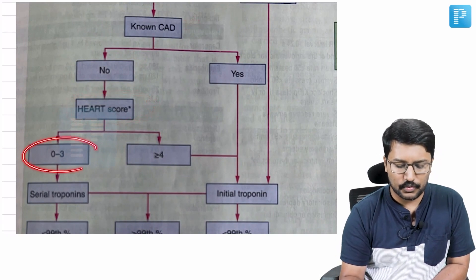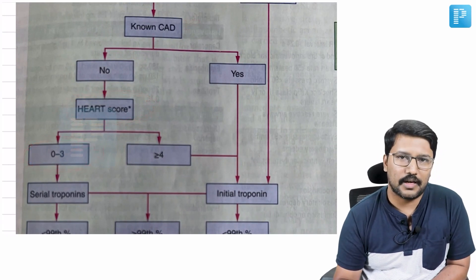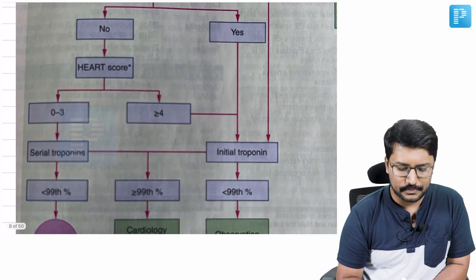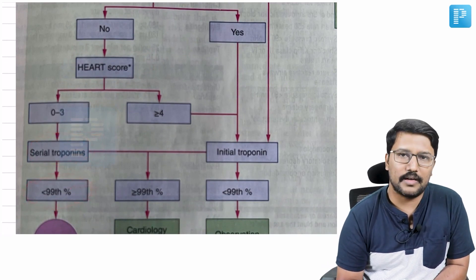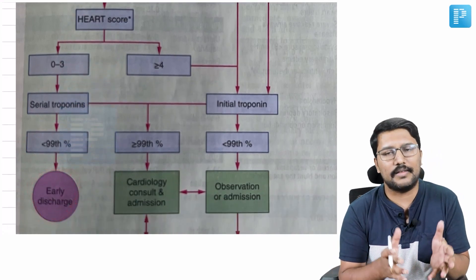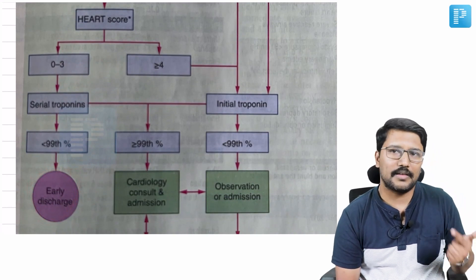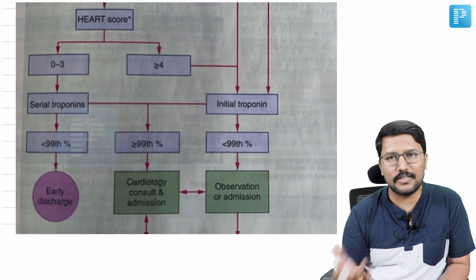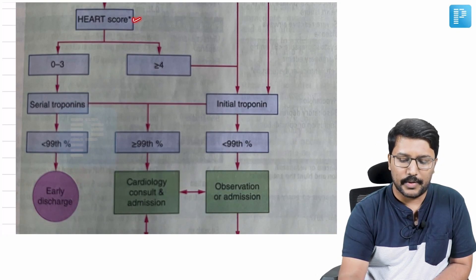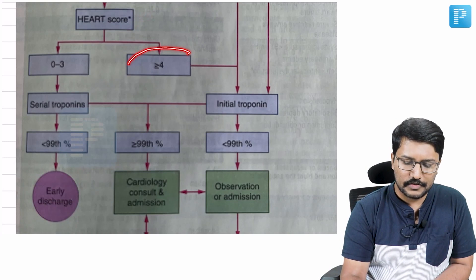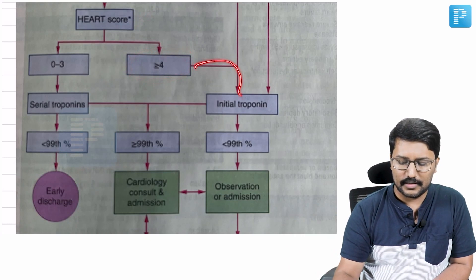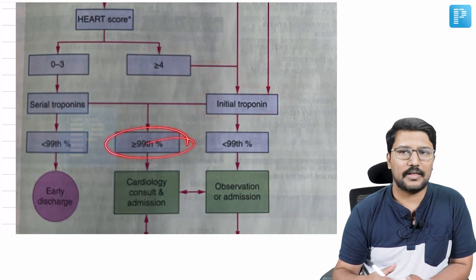In chest pain with a non-ischemic ECG and no known coronary artery disease, you do a HEART score. A HEART score of 0 to 3 indicates low risk of acute coronary syndrome — in that case, proceed with serial troponin levels. If serial troponins are lower than the 99th percentile, ACS is extremely unlikely and you can proceed with early discharge, minimizing unnecessary cost burden to the patient.